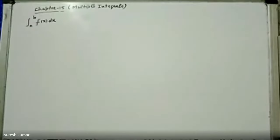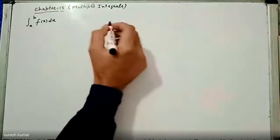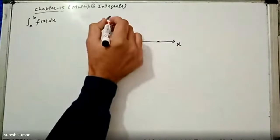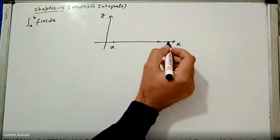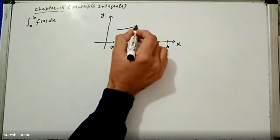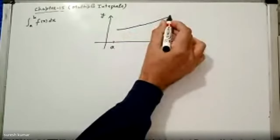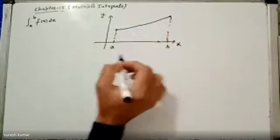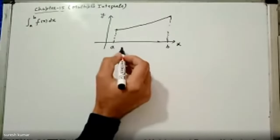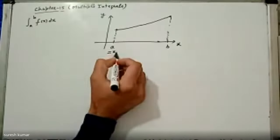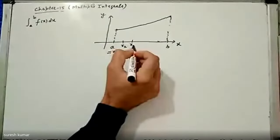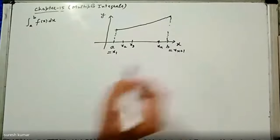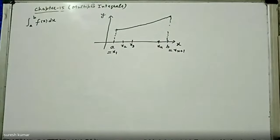Suppose f(x) is a continuous function on the closed interval [a, b]. We divide the interval [a, b] into n parts by choosing points a = x₁, x₂, x₃, ..., xₙ, and then b = xₙ₊₁, so that there are n subintervals of the interval [a, b]. The i-th subinterval is [xᵢ, xᵢ₊₁].